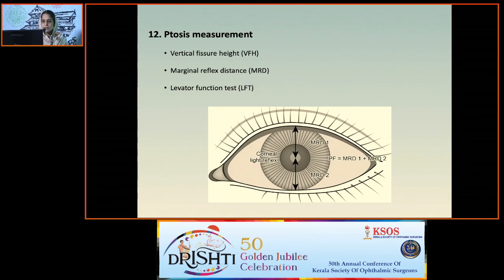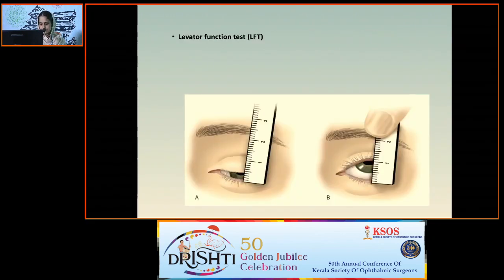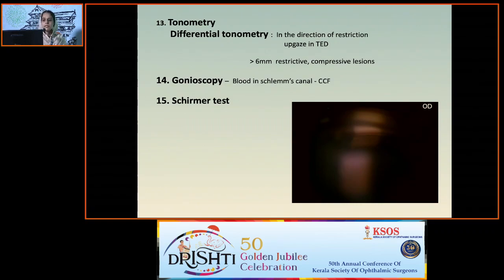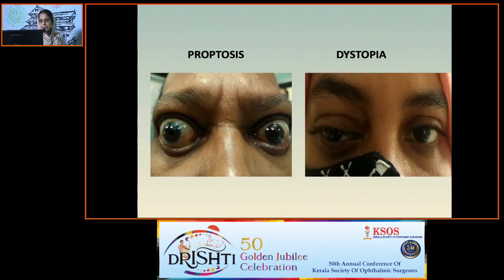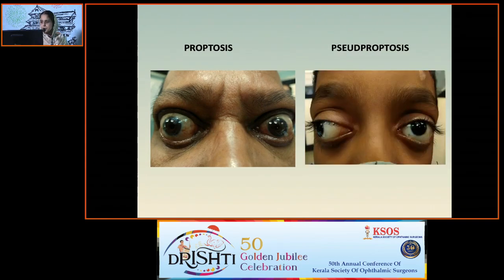Assess proptosis from the bird's eye (Naffziger's) view and worm's view for minimal proptosis. Knapp's rule test: place a ruler along the superior and inferior orbital margins — asymmetry or obliteration of the space between eyeball and rule indicates proptosis. Proptometry can be done with a plastic ruler or a Hertel's or Luedde's exophthalmometer; a reading greater than 21 mm or a difference between two eyes of more than 2 mm is diagnostic of proptosis. Measure ptosis by vertical fissure height, margin-reflex distance, and levator function test. Do tonometry and differential tonometry — a difference of more than 6 mmHg between primary position and restricted position is positive. Always do gonioscopy — blood in Schlemm's canal suggests carotico-cavernous fistula. Do a Schirmer's test. By these tests you can differentiate proptosis from dystopia and pseudoproptosis.